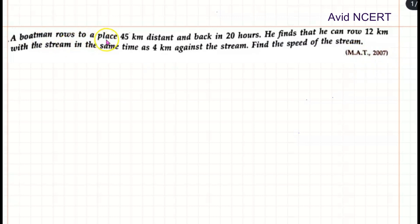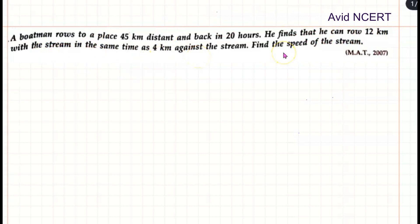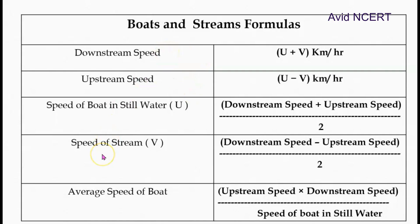A boatman rows to a place 45 km distant and back in 20 hours. He finds that he can row 12 km with the stream in the same time as 4 km against the stream. Find the speed of the stream.